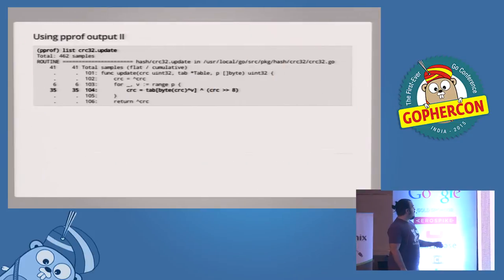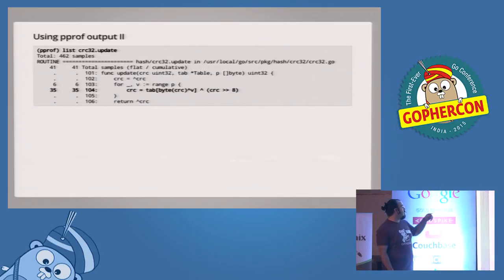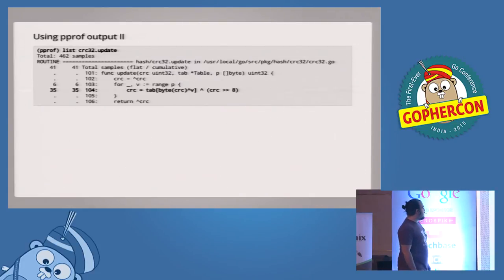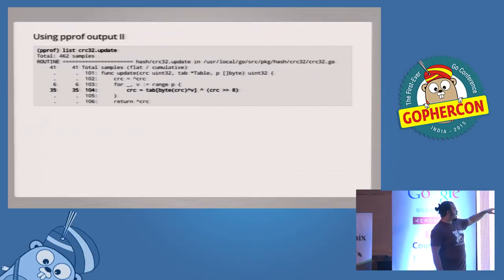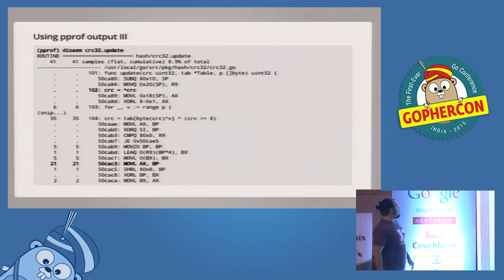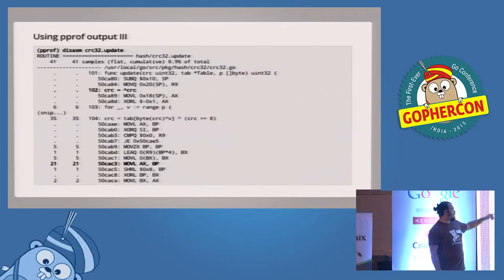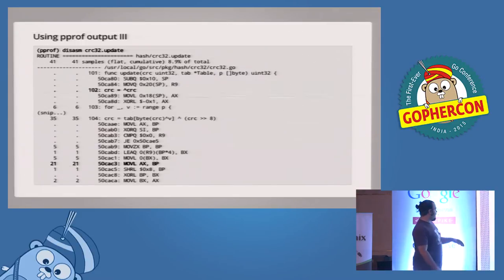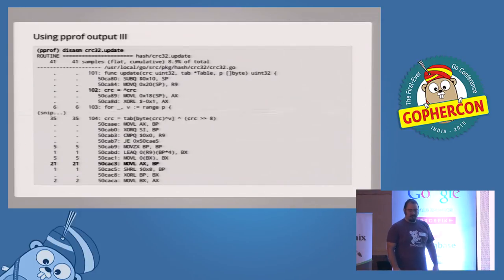You can also look line-by-line at where the profiler was taking samples using 'list' followed by a function name — you need the actual source code available where it was compiled. Here's the hash/crc32 update function: it starts with an XOR, then loops over all the bytes. As expected, all the time is spent in that loop. You can even disassemble and the tool will tell you line-by-line in assembly instructions where time is being spent. The XOR compiles to an XOR, and the expensive CRC tabulation spends a lot of time in a move instruction.